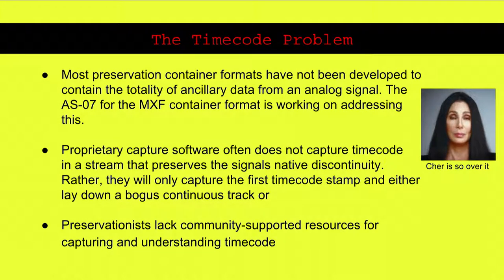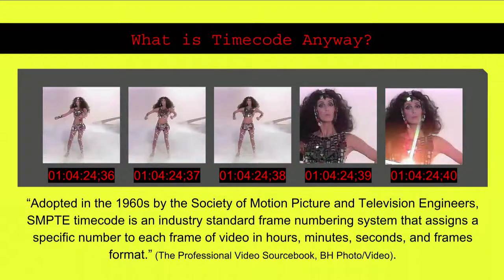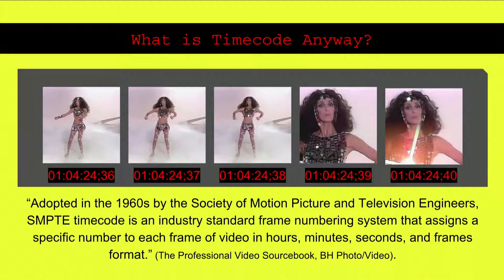Most of the research for this presentation was done by rifling through old pro video magazines from the 1980s. Simply put, SMPTE time code is an industry standard frame numbering system that assigns a specific number to each frame of video in hours, minutes, seconds, and frames format. This assigned frame number can travel with the recorded content as it is copied, edited, and ideally when it is reformatted, helping keep signal components in sync so that source material can always correspond with edited versions. It is not equivalent to a trash fire timestamp — it is usually, but not always, an indicator of real time the work was created.